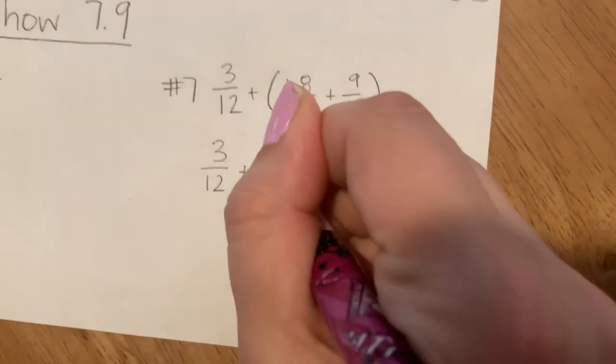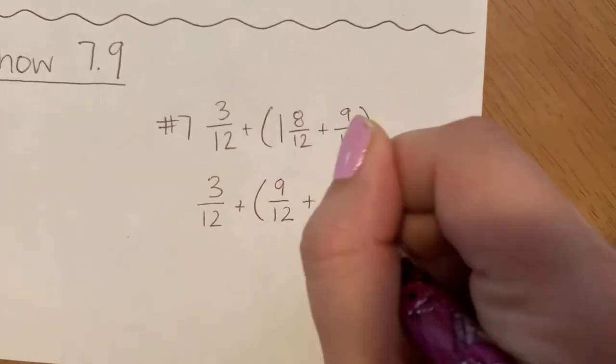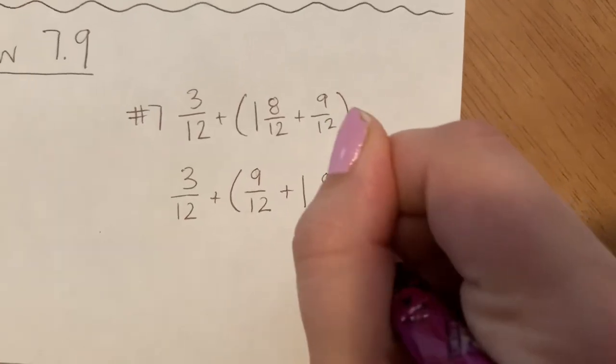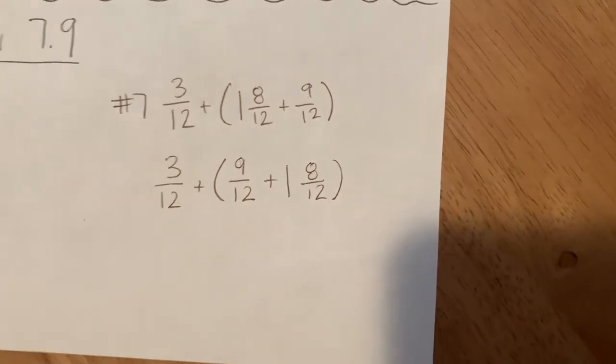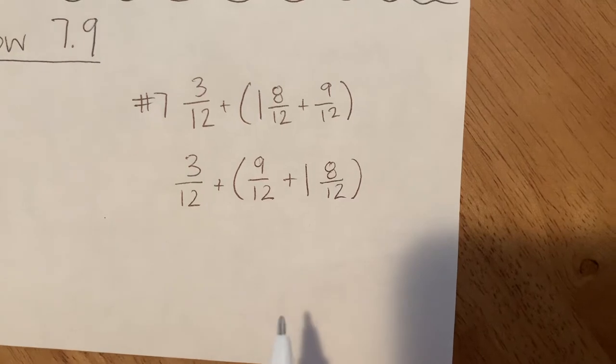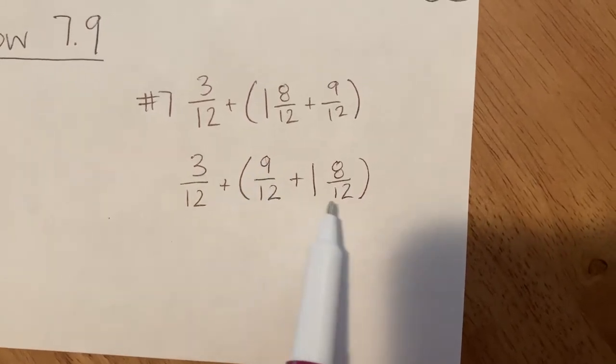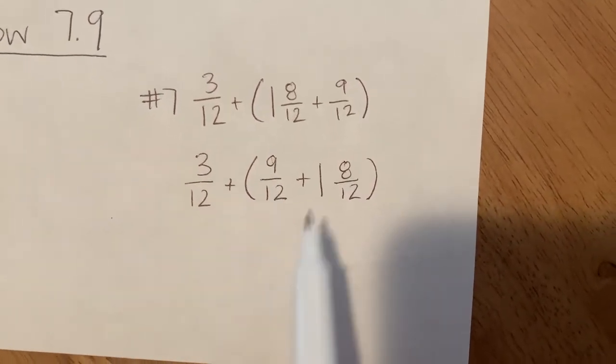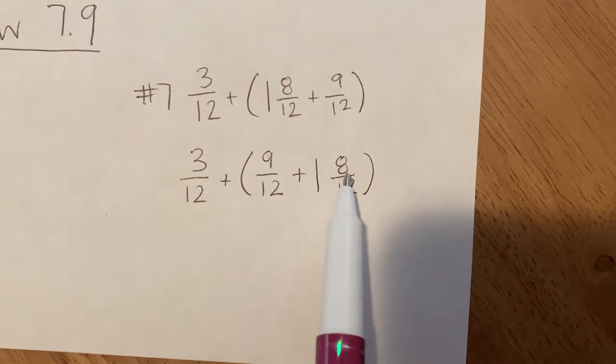Plus 9 twelfths plus 1 and 8 twelfths. Now I'm looking at this grouping and it's still because both of these numbers are inside the parenthesis, that means I would add 9 twelfths plus 1 and 8 twelfths.